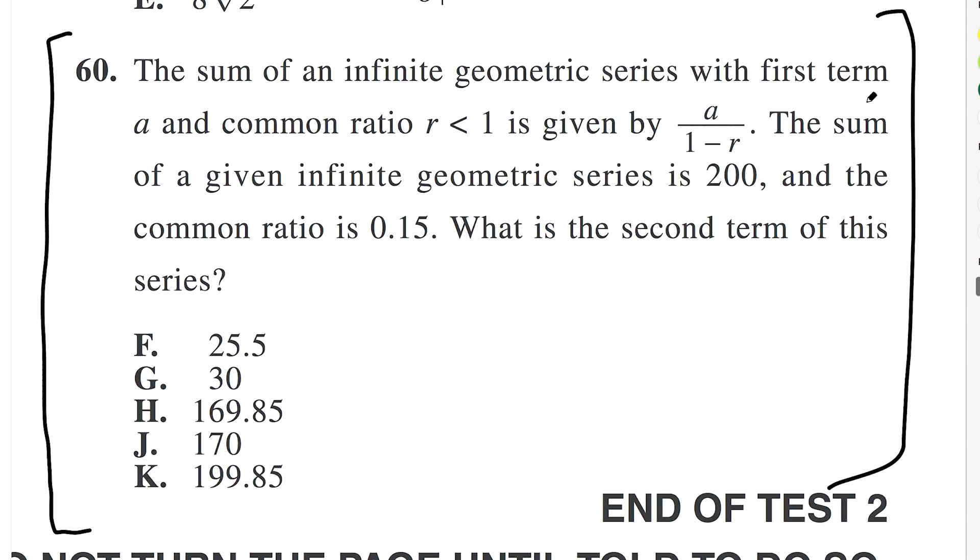So let's go ahead and take a look at number 60. The sum of an infinite geometric series with first term a and common ratio r less than 1 is given by a over 1 minus r. The sum of a given infinite geometric series is 200 and the common ratio is 0.15. What is the second term of this series?